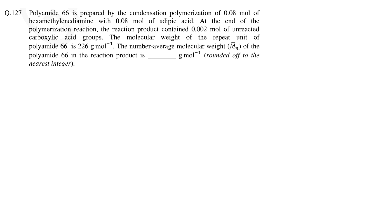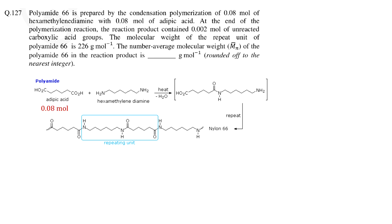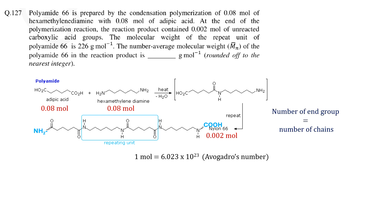In question 127 we need to calculate the number average molecular weight of a polyamide 66 sample. The concentration of monomer and end groups is given. To solve this question we need to find the degree of polymerization and concentration of polymer chains. Since one mole contains Avogadro's number of molecules, we can treat mole as a number. For a polymer which contains different types of chain ends like amine and carboxylic, the concentration of end groups is equal to the concentration of polymer chains.